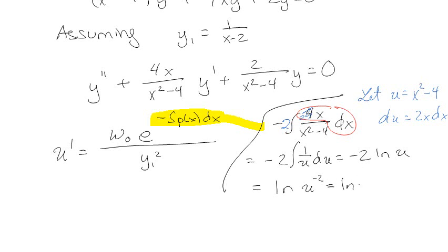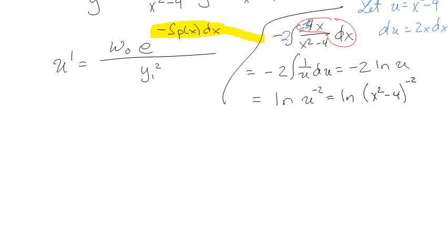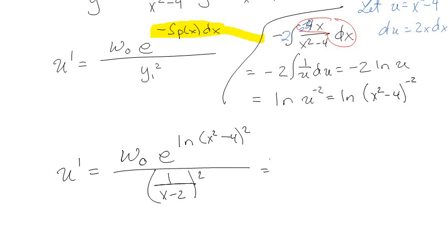I'll just leave it there for the moment. Natural log of x squared minus 4 to the negative 2. So I've got that u prime is equal to this thingy, e to the, this thingy over y1 squared. I forgot what y1, oh, y1 squared is this thingy. And that was just given. That's a negative 2. And then this thingy all comes down. So I have this over this, over this, over this.